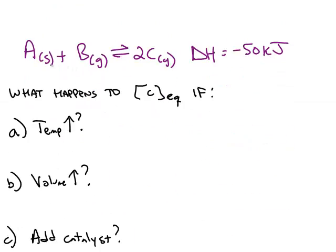As an example, here's an equilibrium system between A, B, and C. Delta H is given as negative 50 kilojoules. And we want to know what happens if we start with the system at equilibrium. What's going to happen to the amount of C at equilibrium if we make different stresses?